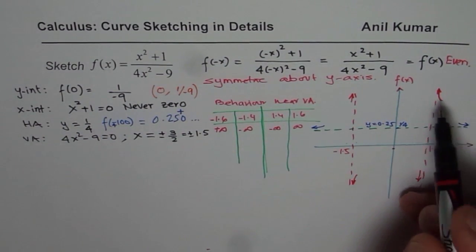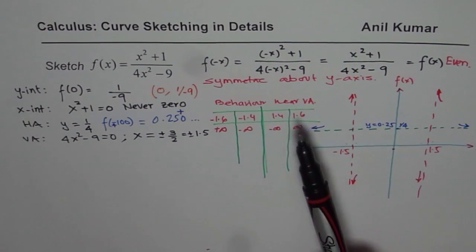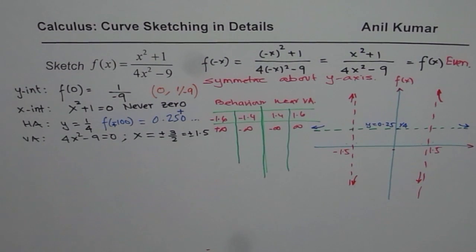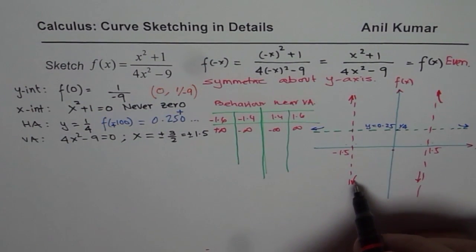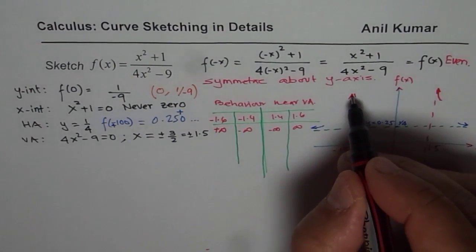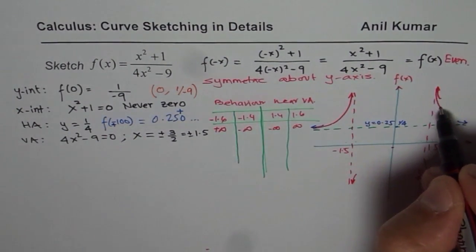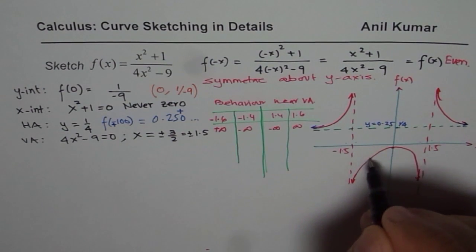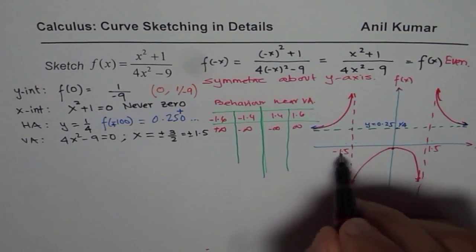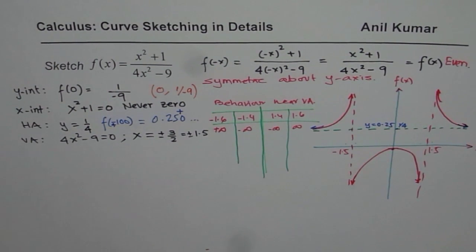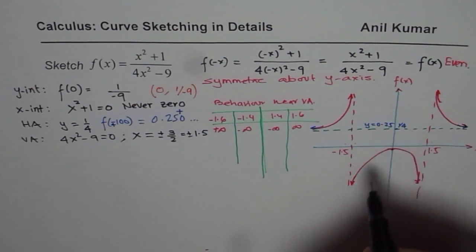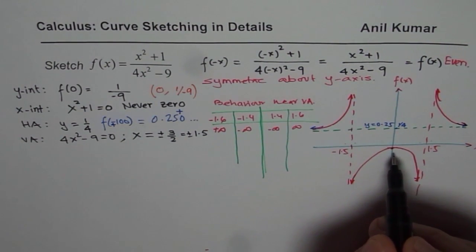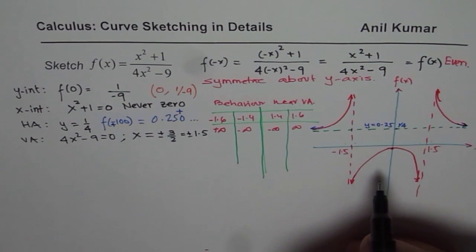At this stage you can get a rough idea of the graph. We will also do first and second derivative analysis for local maximum or minimum and concavity. From the characteristics so far, the middle portion of the graph — between the vertical asymptotes — seems to have a local minimum near x = 0, since we know the y intercept is negative and the function is symmetric. It is always a good idea to see where you are heading while sketching the graph.